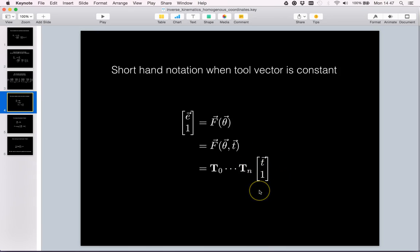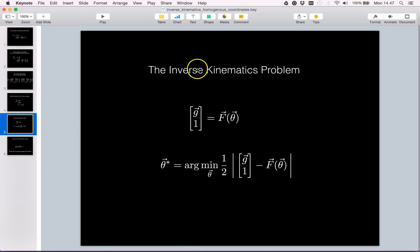With this notation, we can now explain what the inverse kinematics problem is all about. The idea is we are given some desired goal position of where we want our tool position to reach, this is denoted by the g vector. We now wish to solve for the theta values that would make the end effector reach the desired goal.